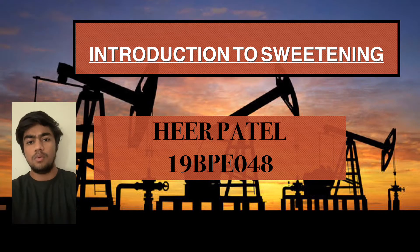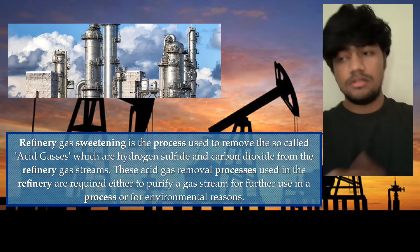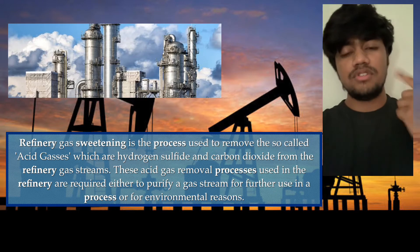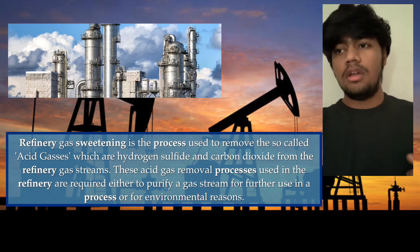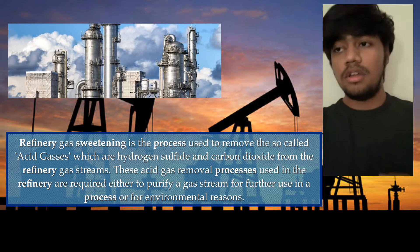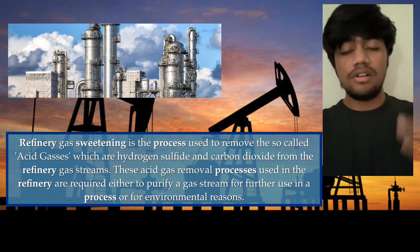Today we are going to discuss the various terms of sweetening in the petroleum engineering field. Refinery gas sweetening is basically the removal of acid gases. Acid gases are of two types: hydrogen sulfide and carbon dioxide. They are removed for two major reasons: first, to purify a gas stream, and second, for environmental reasons.